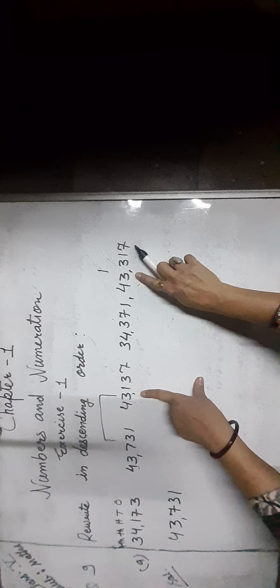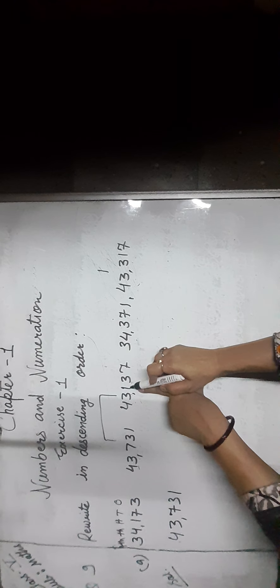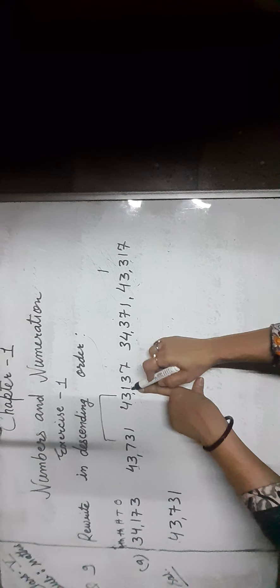We move to the thousands place digit — 3, 3, 3 — all same. Now compare the hundreds place digit, that is 7, 1, and 3. Seven is greater than 1 and 3, so we write 43,731 first. Now compare the remaining numbers — hundreds place digit is 1 and 3. Three is greater than 1, so we write 43,317 next, then 43,137.